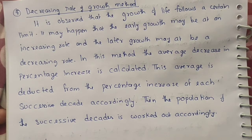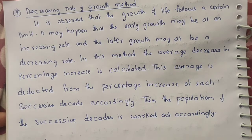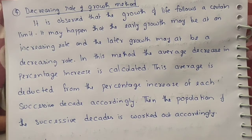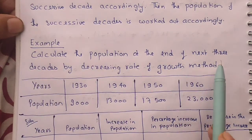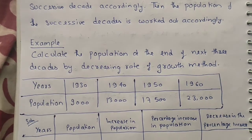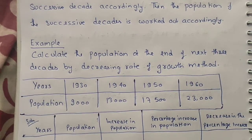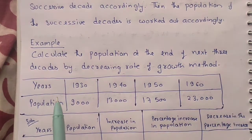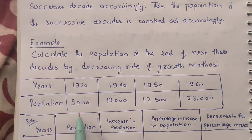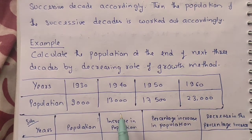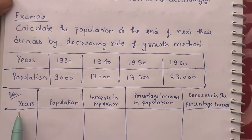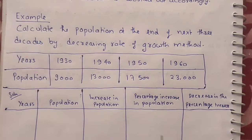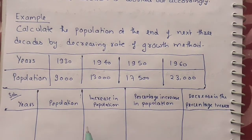This method may seem a little confusing to understand, so we will look at a numerical problem. The problem asks: calculate the population at the end of the next three decades using the decreasing rate of growth method. The given data is: 1930 population = 9,000; 1940 = 13,000; 1950 = 17,500; 1960 = 23,000. We need to make a table with columns: years, population, and increase in population.